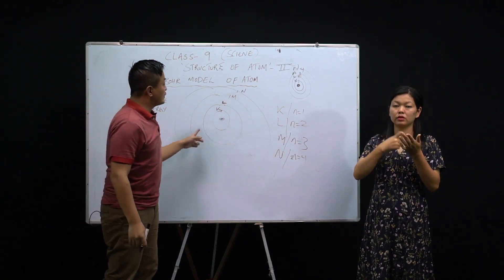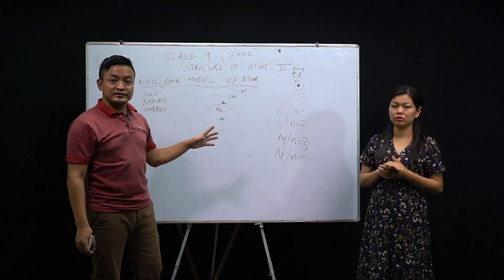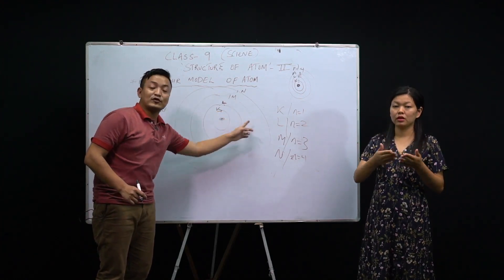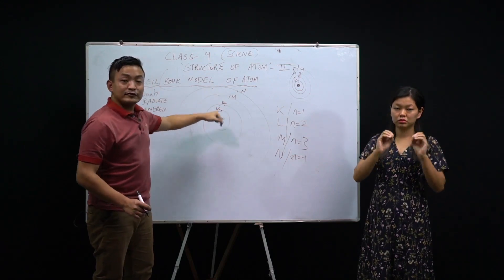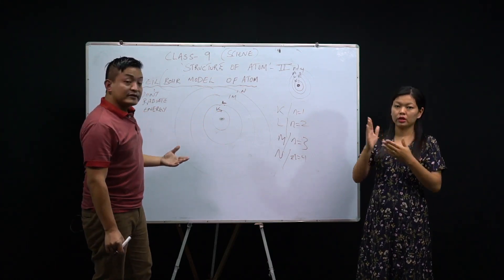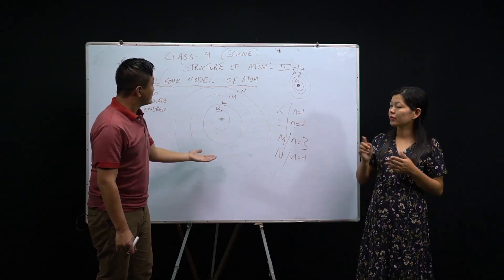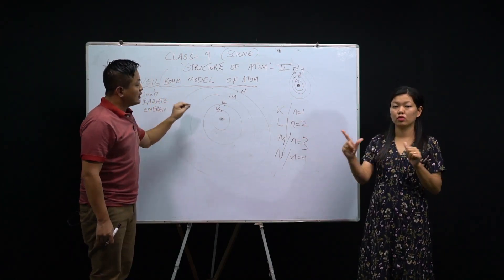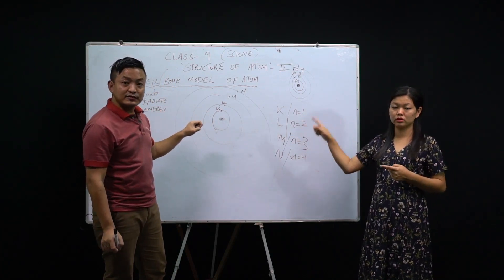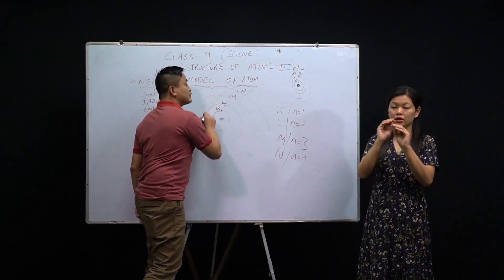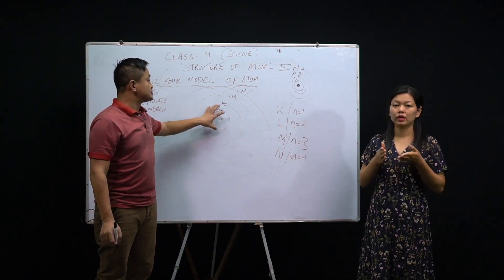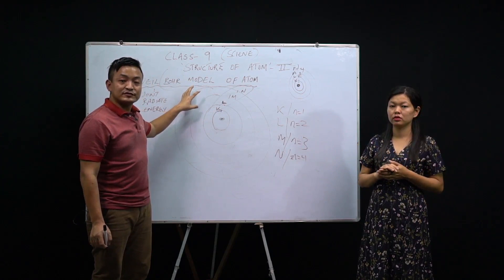You can see the difference: in Rutherford's model, he did not mention anything about discrete orbits, and since electrons were revolving they would accelerate and radiate energy. But in Bohr's model, when electrons revolve around these fixed shell orbits, they do not radiate energy. That is the key difference. Electrons are distributed in these shells — that is important to keep in mind.